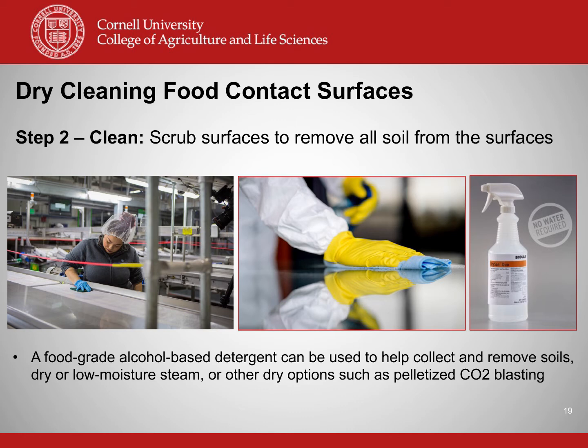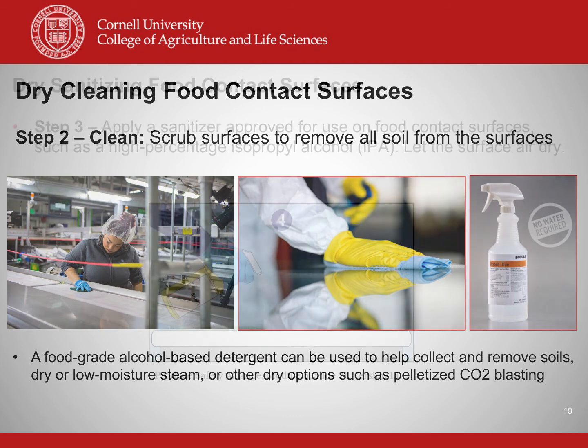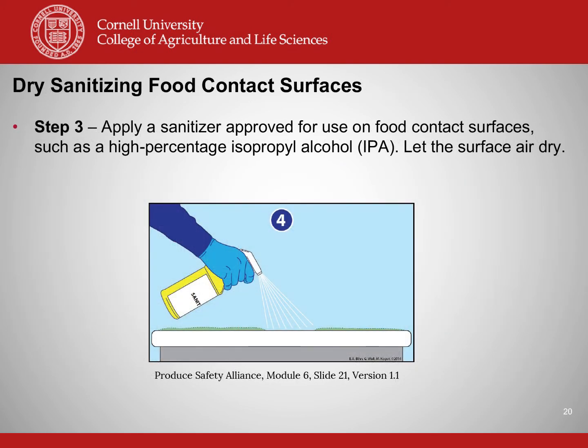Step two in dry cleaning is to clean the surface by scrubbing. Some dry cleaning options include alcohol-based detergents, low moisture steam, or pelletized CO2 blasting. Step three would be to apply a sanitizer when necessary and appropriate for the surface — apply a sanitizer approved for use on food contact surfaces, such as a high percentage isopropyl alcohol, and let the surface air dry. Remember, when it comes to sanitizers, the label is the law, so follow the label completely.